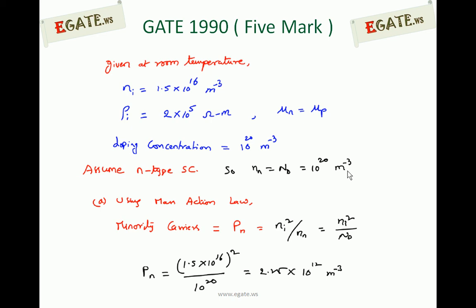First, we calculate minority carrier concentration, which is always calculated from the mass action law. Mass action law states that under thermal equilibrium, N×P = Ni² is constant for a given temperature. For N-type semiconductor: Nn×Pn = Ni², so Pn = Ni²/Nd = (1.5×10¹⁶)²/10²⁰ = 2.25×10¹² per meter cube. This is the minority carrier concentration.